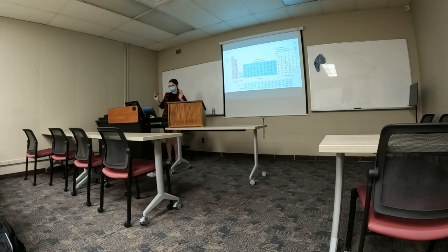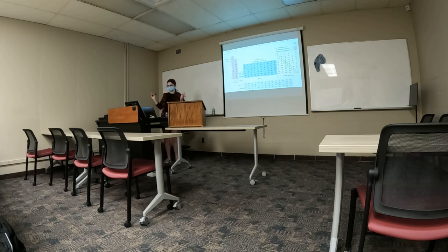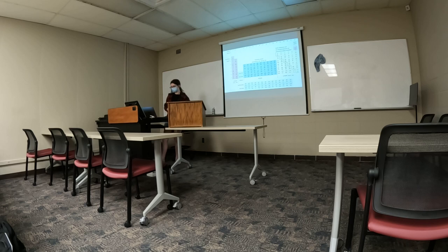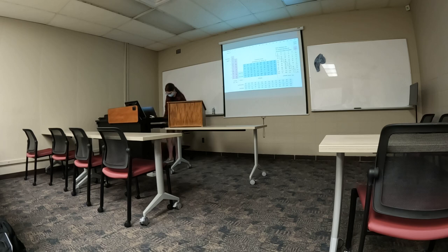You can do the whole periodic table from the first group to the 18th group including these rows, but because there are 14 elements per row, it gets very wide and takes up way too much space. So they're placed down here because they share a lot of the same properties. And that's the periodic table — there's way more to find out, a lot more people have done work on it, and there are other ways to organize it. Thank you very much.